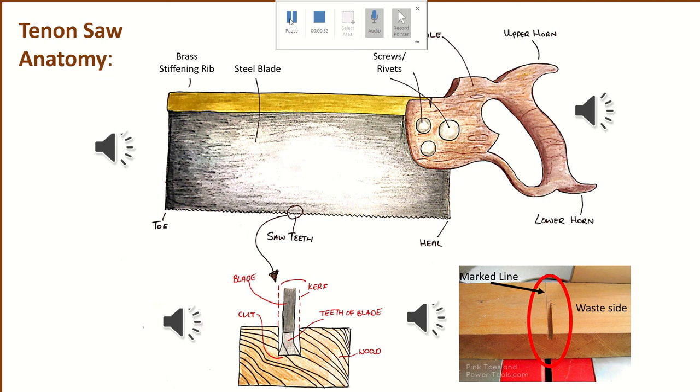The blade itself is made from a high carbon steel and generally has 25 teeth per 25 or 15 teeth per 25 mil. And then moving on to this brass line at the top of the sketch which is called your brass stiffening rib. The function of that is to stiffen and to strengthen the blade when you're using it.